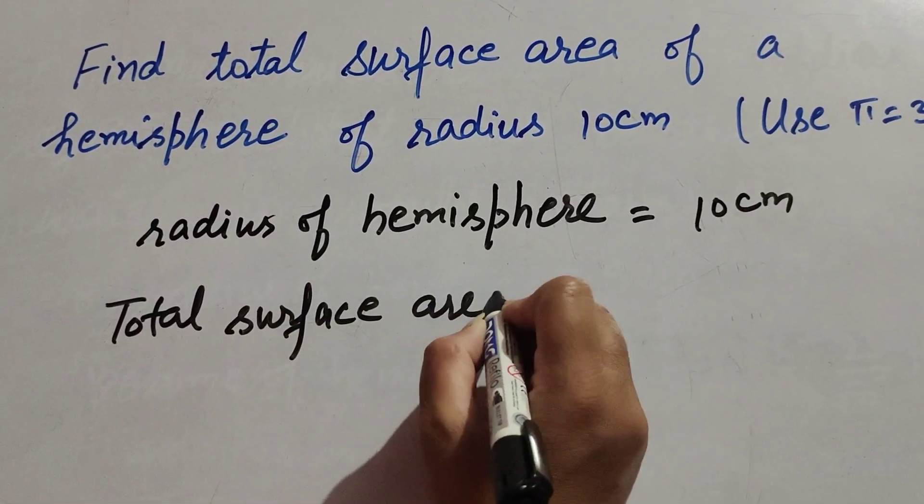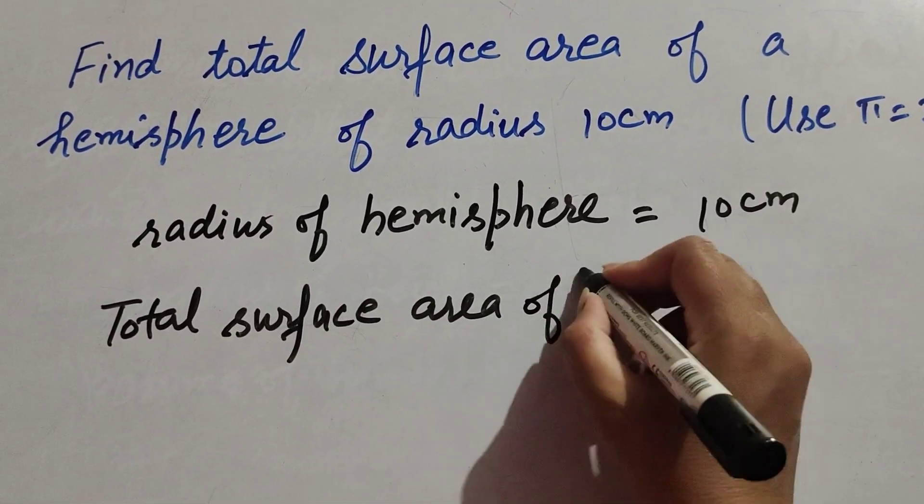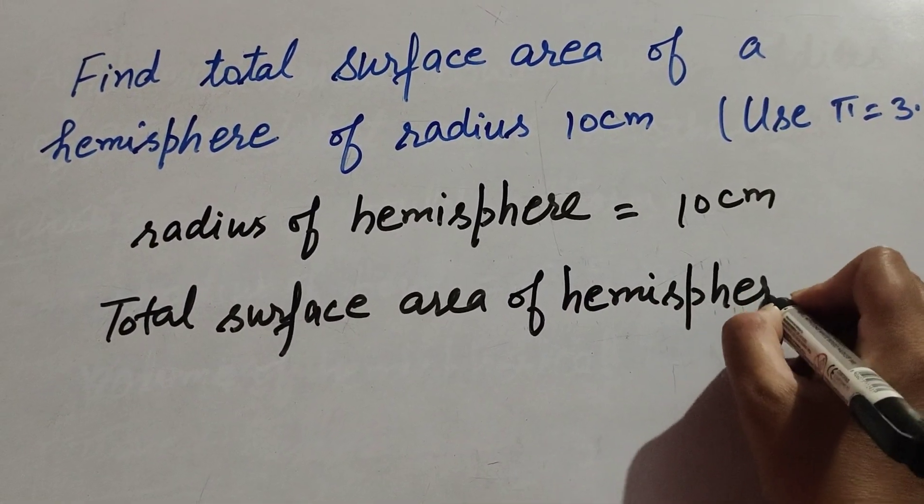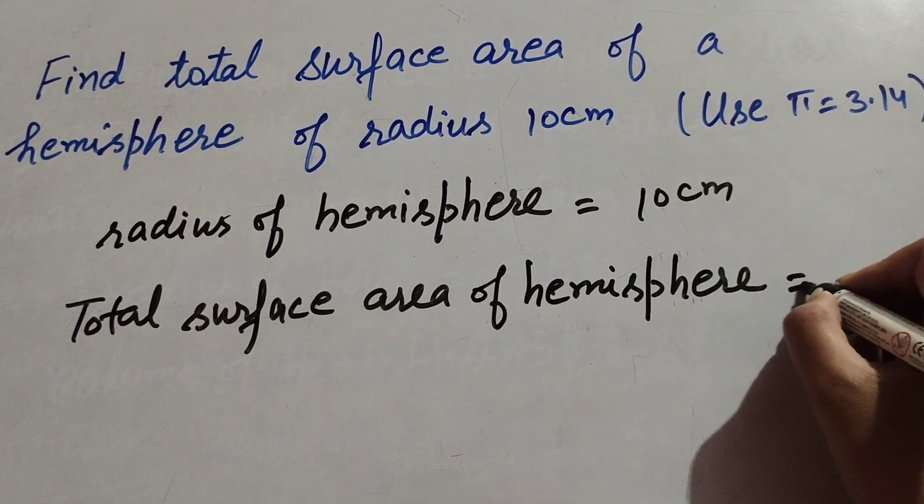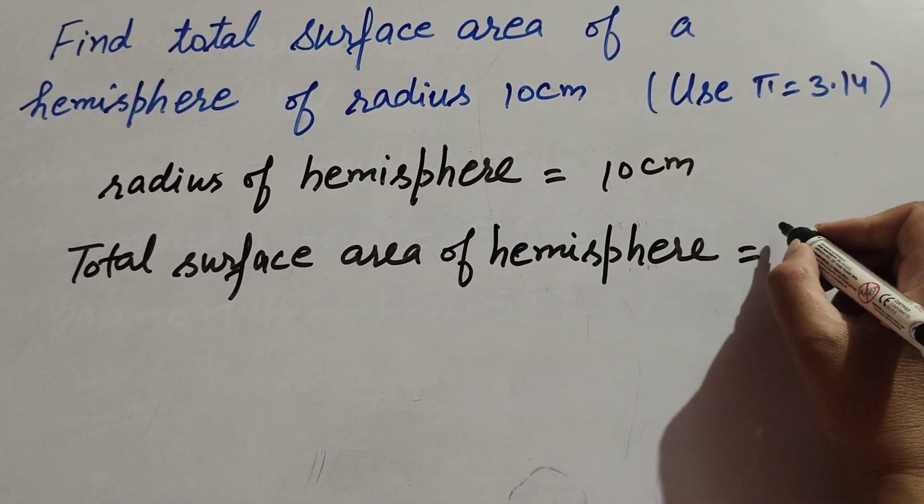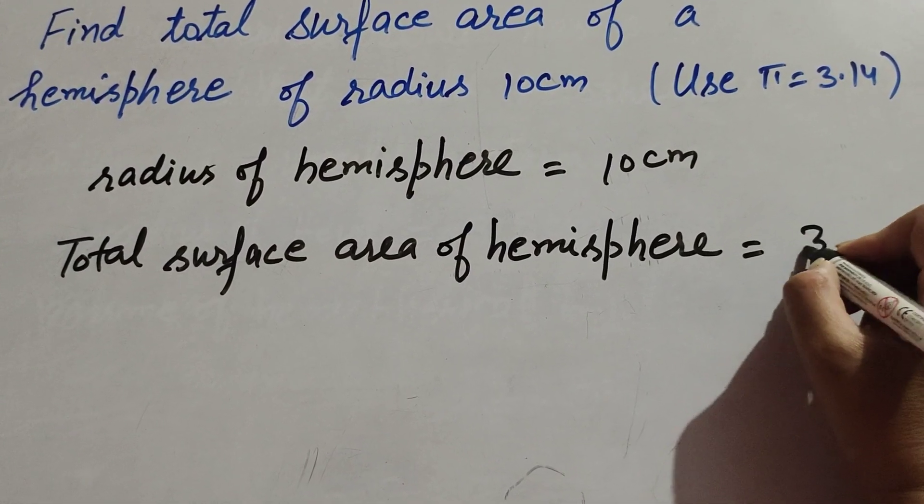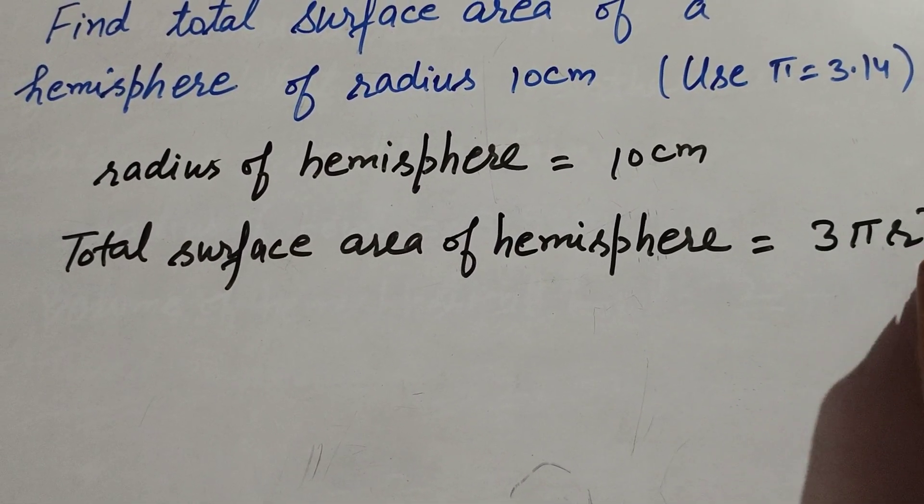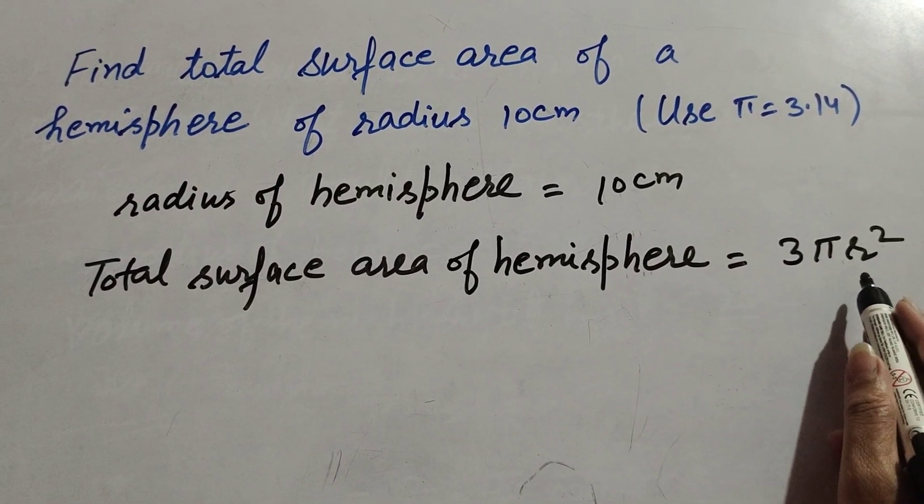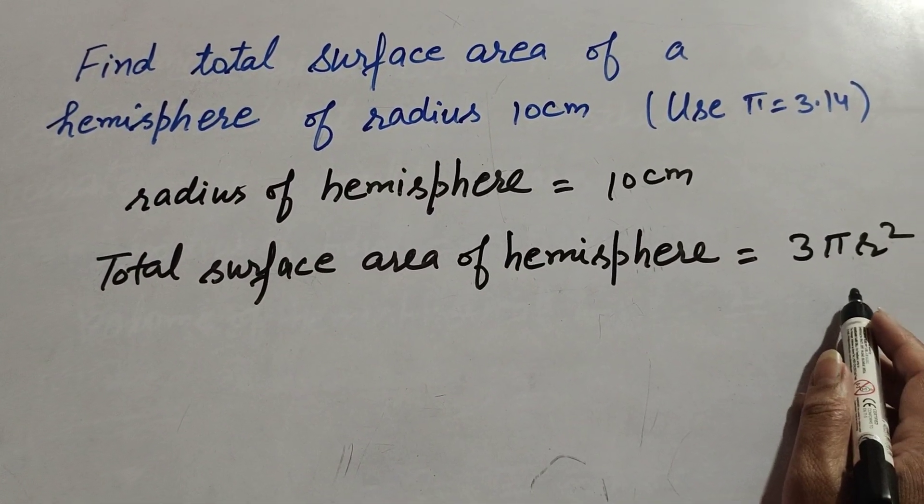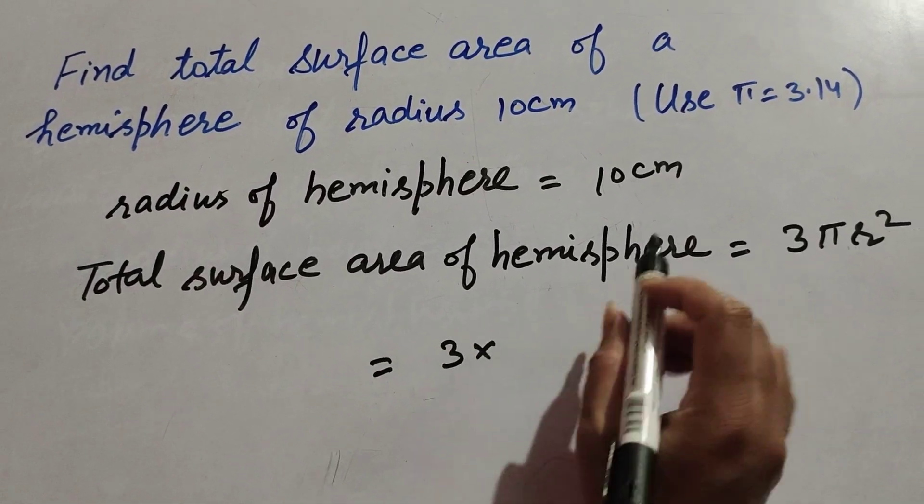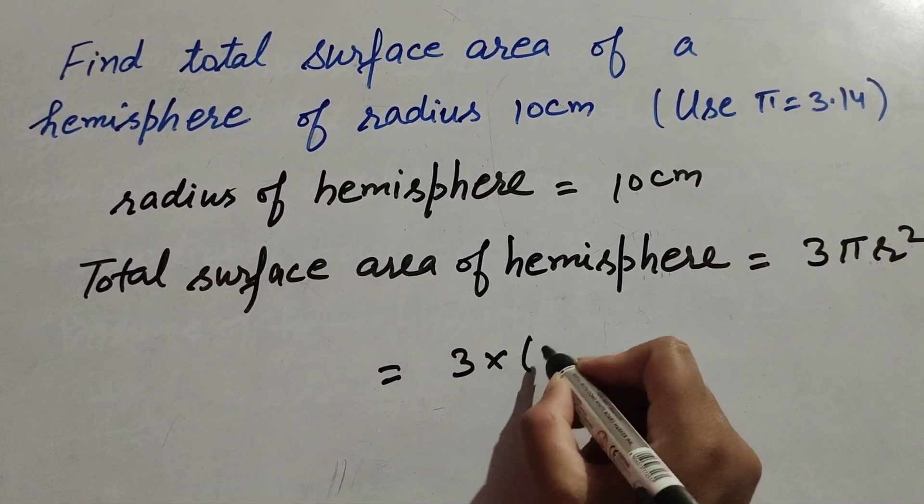We know the formula to find total surface area of hemisphere. It is equal to 3πr². The formula is 3πr². It equals 3 times π, its value is given 3.14.